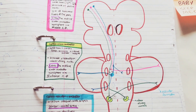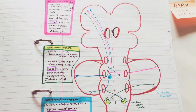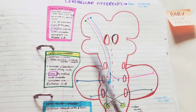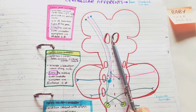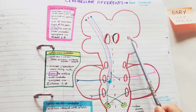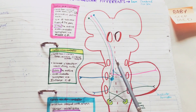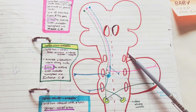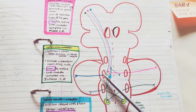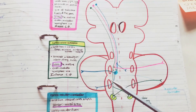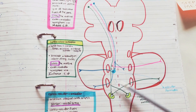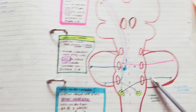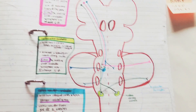I should have oriented you to the drawing first. This is the cerebral cortex, this is the midbrain, this is the pons, this is the medulla, this is the cerebellum, and this is the spinal cord.